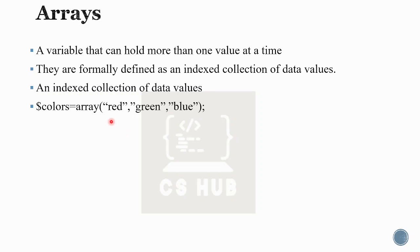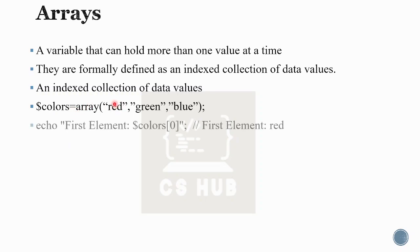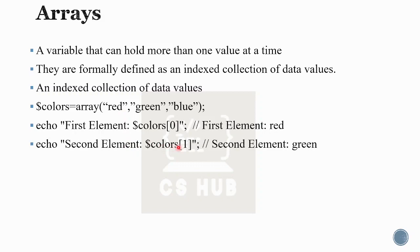Once $colors is defined as an array, you access elements using their index. $colors[0] gives 'red', $colors[1] gives 'green', and $colors[2] gives 'blue'. PHP also supports negative indexing — $colors[-1] gives the last element 'blue', $colors[-2] gives 'green', and $colors[-3] gives 'red'.